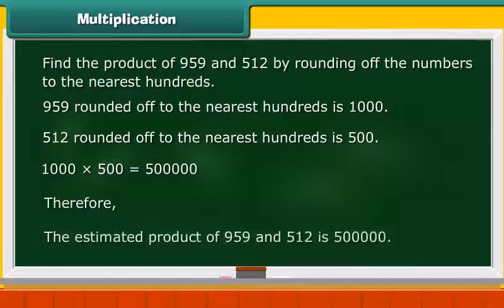Therefore, the estimated product of 959 and 512 is 500,000.